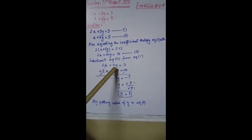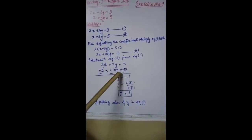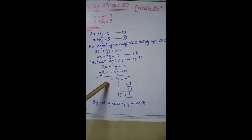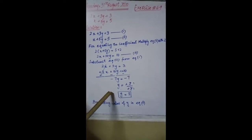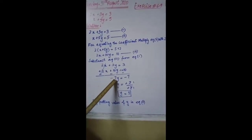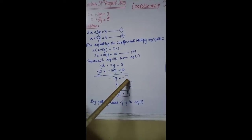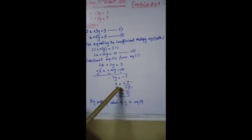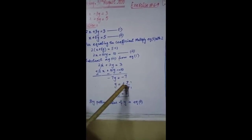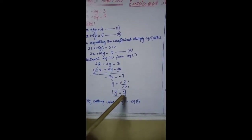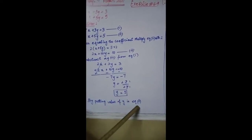Subtract equation 3 from equation 1: 2x + 3y = 3 minus 2x + 10y = 10. The signs are changed; 2x cancels with -2x. Subtracting 10y from 3y gives -7y, and 3 - 10 = -7, so -7y = -7. Dividing by -7: the negatives cancel, giving y = 1.